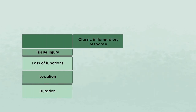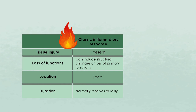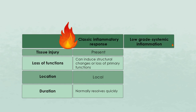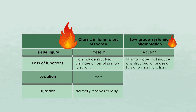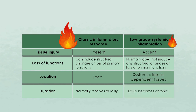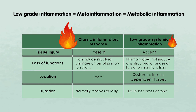In contrast to a classical inflammatory response, which can also lead to some tissue damage that later has to be repaired, low-grade systemic inflammation does not cause severe damage in the tissue. However, the inflammation is difficult to resolve and easily gets chronic. While it does not induce structural changes or loss of primary function, it still promotes insulin resistance and also the development of atherosclerosis. Due to its close relationship with metabolic syndrome, low-grade systemic inflammation has recently been referred to as meta-inflammation or metabolic inflammation.